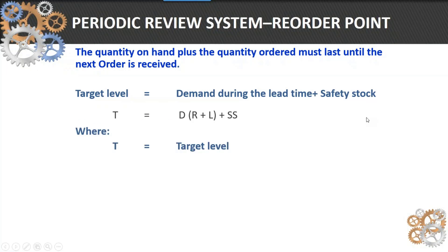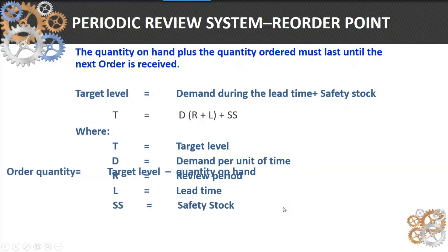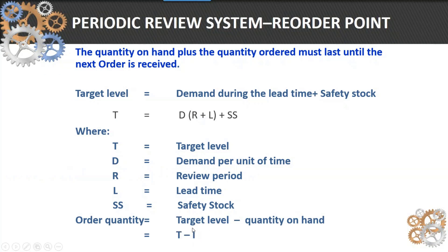The target level equals the demand per period. That demand can either be historical demand, or you can go into MRP and calculate the actual projected demand. You then multiply or add the review period and the lead time times that demand and add safety stock. That gives you your target level. What you have on hand minus the target level is typically what you're going to order.